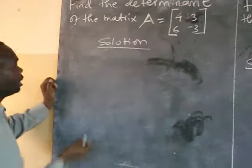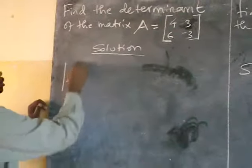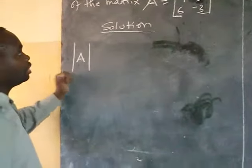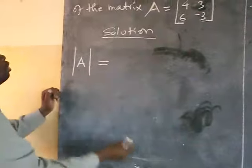So, finding the determinant, we are going to put absolute signs. This shows that now we are finding the determinant, equals to